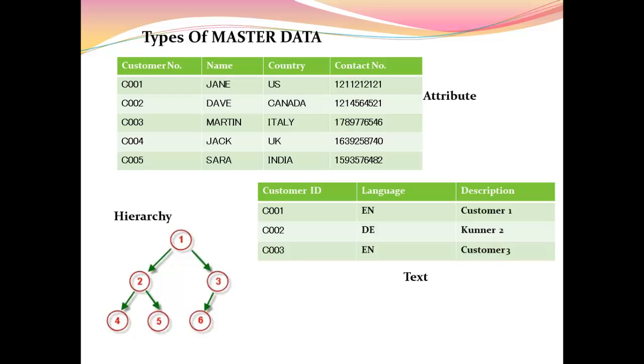In text type of data, the same customer number is attached to its respective language as SAP is used by multiple countries which speak multiple languages. For customer C1 who has its login language as EN, it would provide the description in English as customer 1, whereas our customer 2 is logging in German with code DE and its description would be in German.